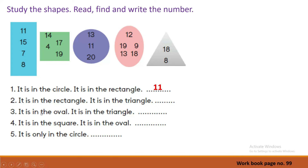Number 3: it is in the oval and it is in the triangle. Oval has 18, triangle has 18. What is the answer? The answer is 18. Very good.